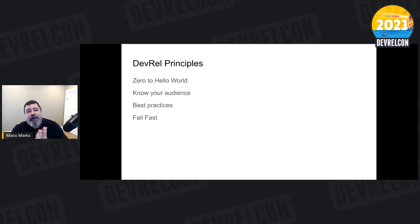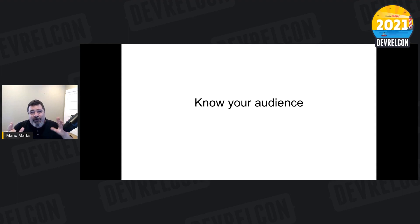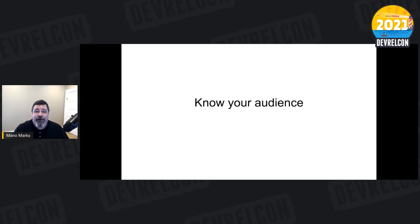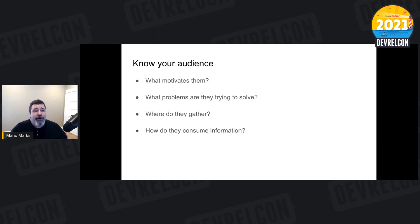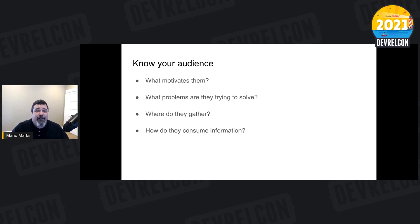Here are the developer relations principles I'm going to focus on: zero to hello world, which we already talked about; know your audience; best practices; and fail fast. Know your audience is one of the most common things I've heard in developer relations, usually in the context of how to create content for a particular external audience. But it's important internally as well. Some questions you can ask: what motivates them, what problems are they trying to solve, where do they gather online or in person, and how do they consume information?